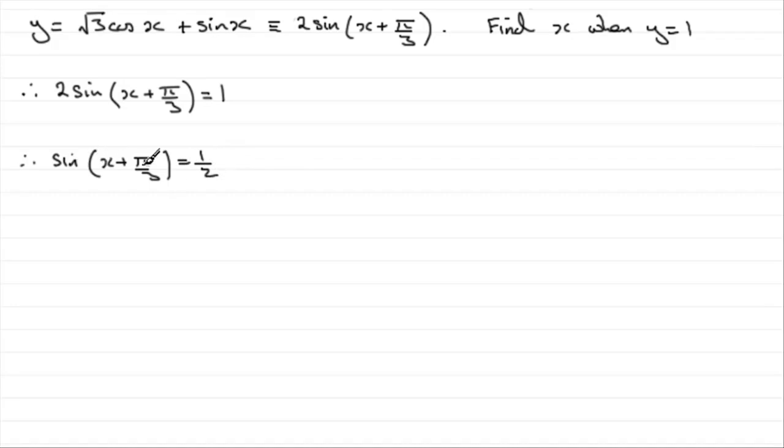And to get what x plus pi upon 3 is, we now need to inverse sine both sides. So if we take the inverse sine of both sides, we end up with x plus pi upon 3 equals the inverse sine of a half.